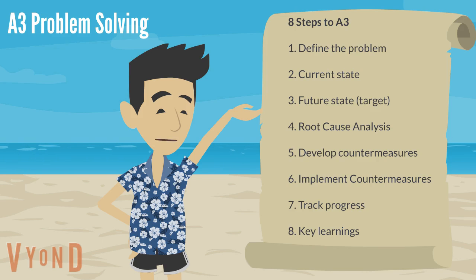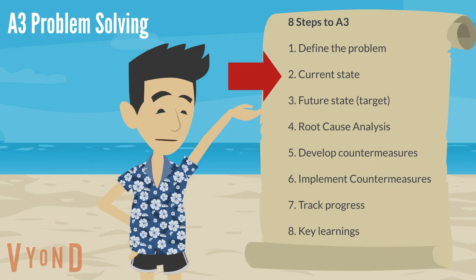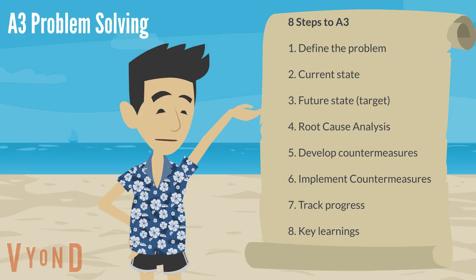There are eight steps to the A3 process. Number one: define the problem. This is important and it will set the scene for the whole activity. Two: current state — what is the current situation, which may include data analysis and charts.